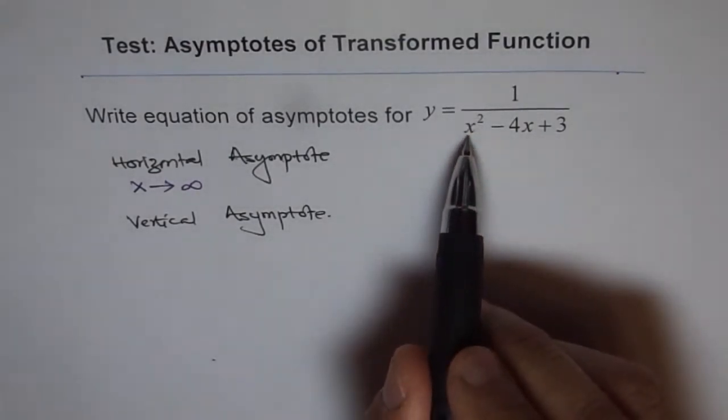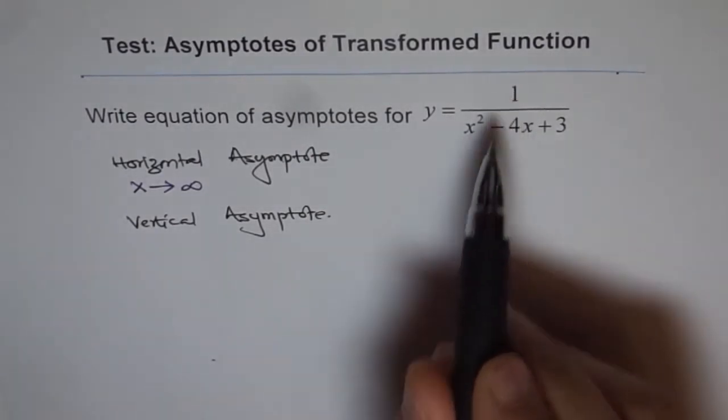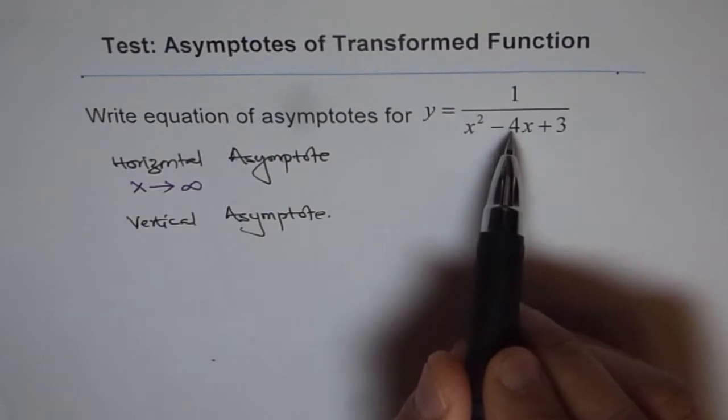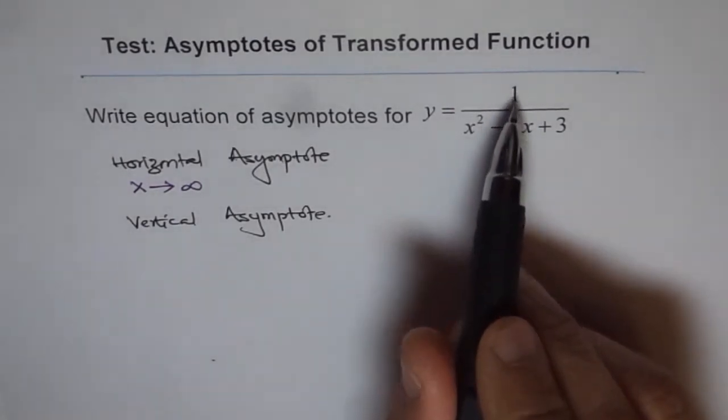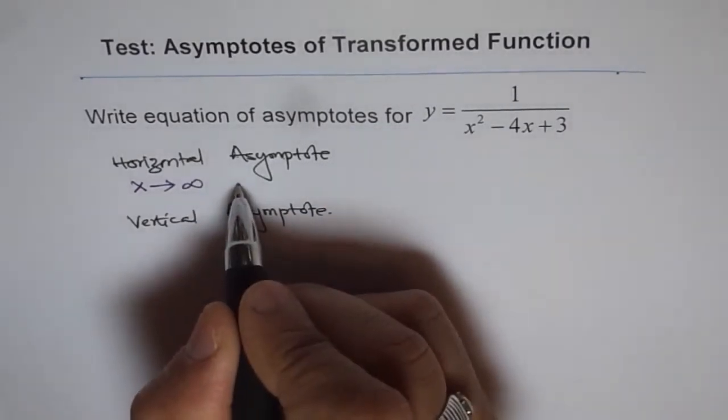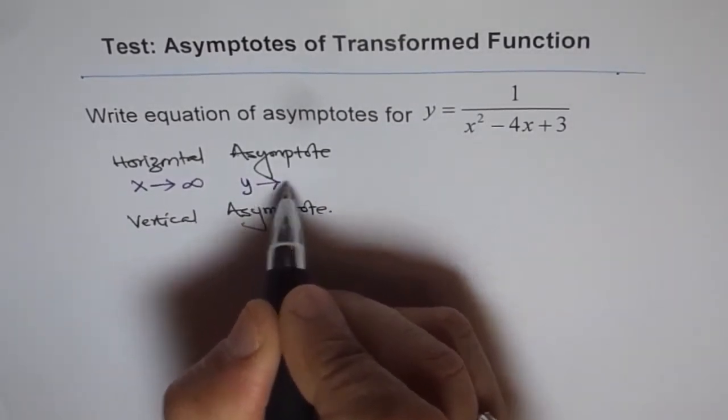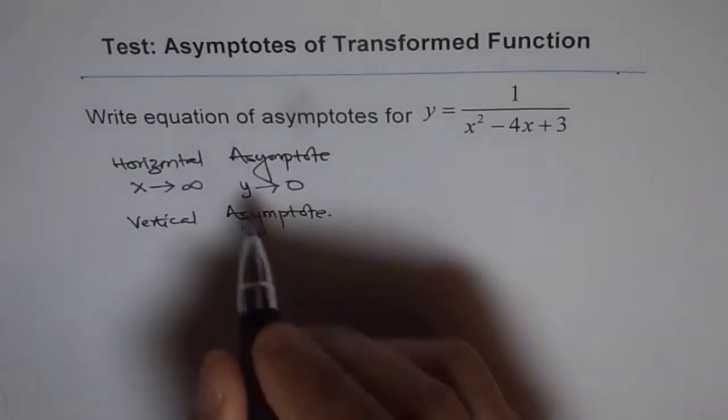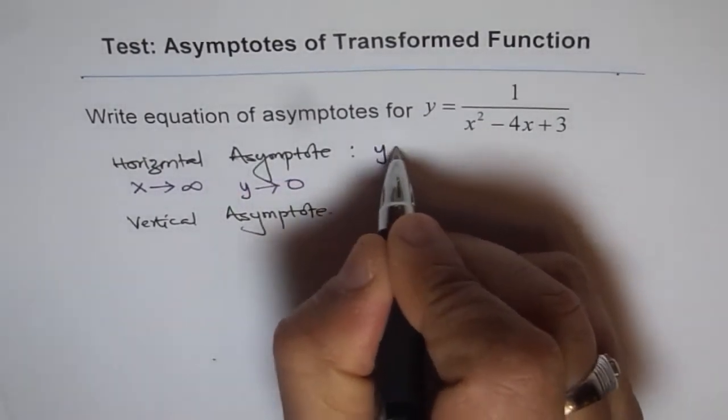If I write a very large number for x, it will be 1 over a large number, which approaches 0. So the value of y approaches 0. Therefore, the horizontal asymptote is y equals 0.